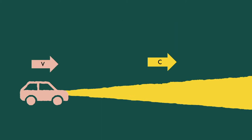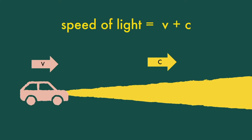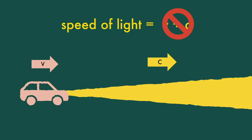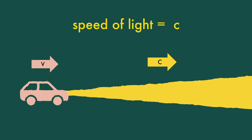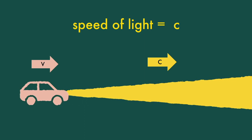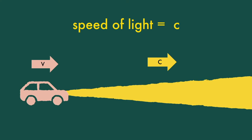Consider a stationary car that projects a light wave with speed C forward from its headlights. With respect to the ground, the speed of light is C. But if the car moves with an enormous speed V in the direction of the light wave, using simple vector addition the speed of light with respect to the ground should be V plus C. But this isn't the case — light is an electromagnetic wave, and based on Maxwell's experiments, even if the source is moving, the speed of an electromagnetic wave in vacuum is still C.